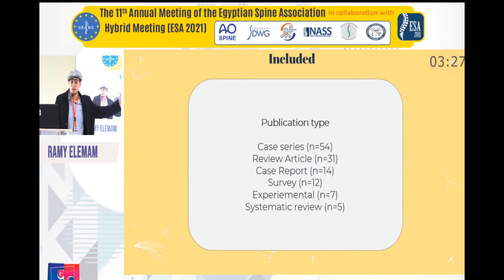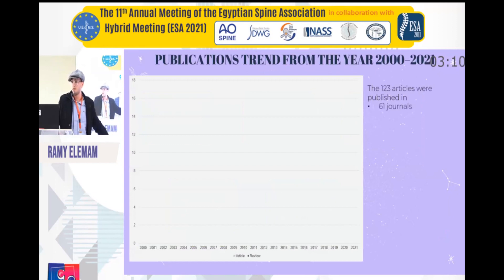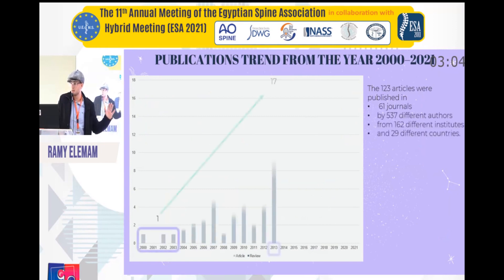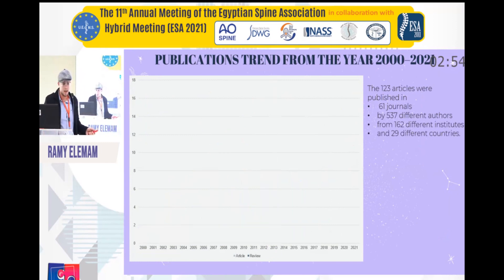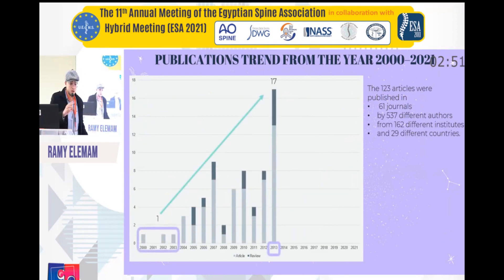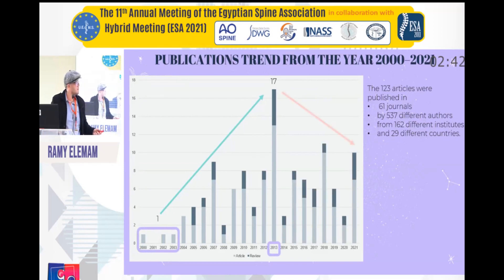This resulted in over 54 case series, 31 review articles, as well as case reports, surveys, and so on. For the publication trend, from the year 2000 to 2021, there was a sharp rise from approximately one publication per year between 2000 and 2003, peaking at 17 in 2013, and then decreasing from that point onward.